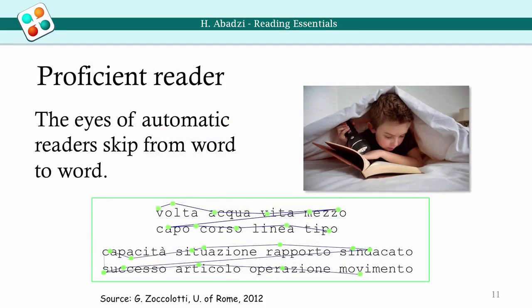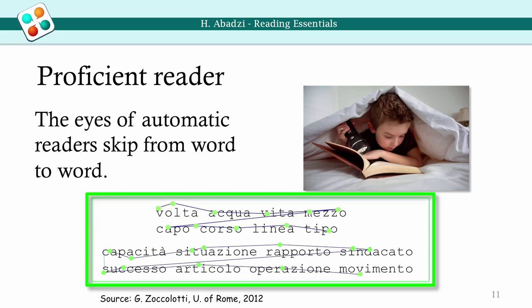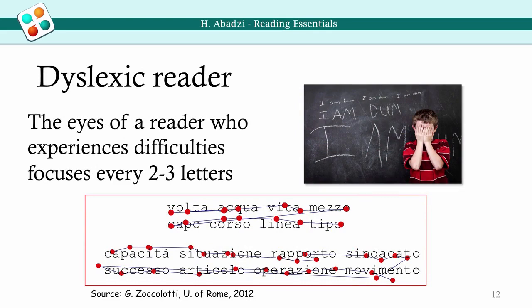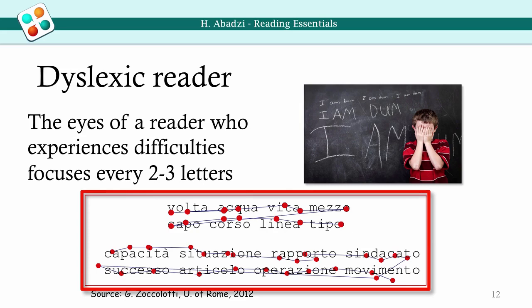Our ability to use the face recognition circuitry results in parallel processing of multiple letters. When we read, we move our eyes in characteristic patterns called saccades. The eye movements of automatic or proficient readers are different from those of beginners. In the graphs, a proficient Italian reader, shown in green, focuses about once every word. By comparison, a reader who experiences difficulties, such as dyslexia, focuses every two to three letters and may go back to re-read.